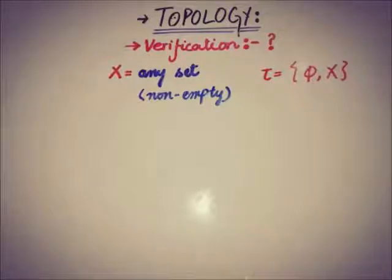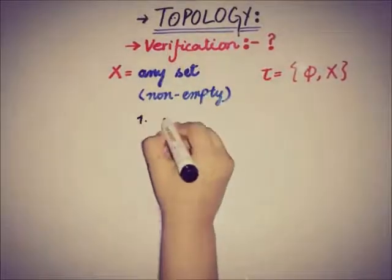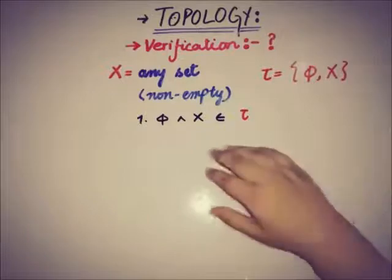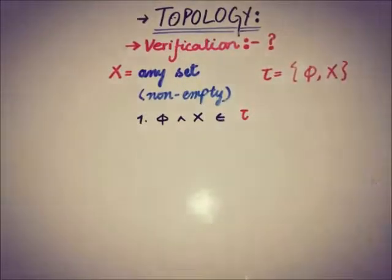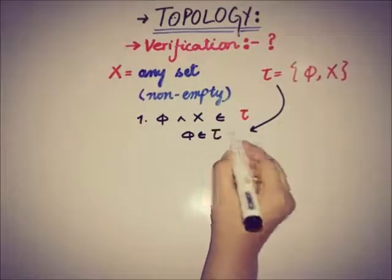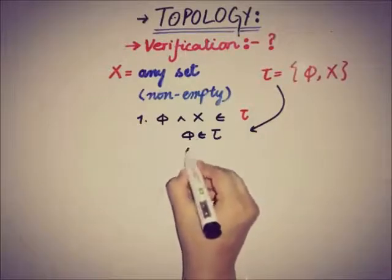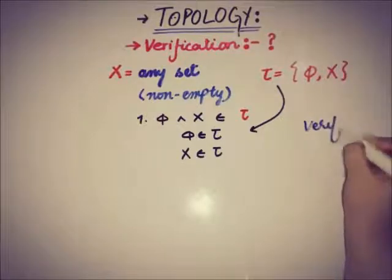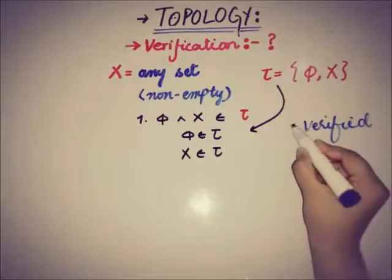Let's start verifying. The very first property is that the empty set phi and the set X itself belong to the collection of subsets of X. We clearly see that the empty set is a member of tau, and also X belongs to tau. So the first condition regarding the empty set and the set itself is verified.